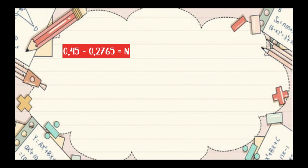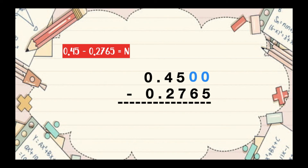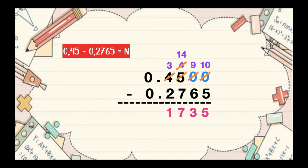Let's have another example. 0.45 minus 0.2765 equals n. The first thing that you need to do is to align the decimal point, then annex the zeros. 0 minus 5 cannot be, so we borrow 1 from 5 — 5 becomes 4, the middle 0 becomes 9, and the first zero from the right becomes 10. 10 minus 5 is 5. 9 minus 6 is 3. 4 minus 7 cannot be, so we borrow 1 from 4 — 4 becomes 3 and the other 4 becomes 14. 14 minus 7 is 7. 3 minus 2 is 1. Copy the decimal point. 0 minus 0 is 0. So the difference is 0.1735 ten-thousandths.